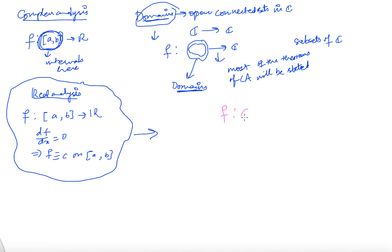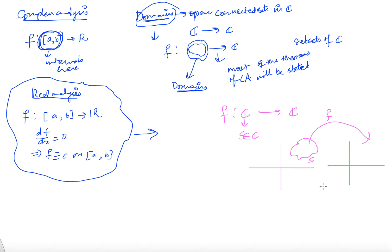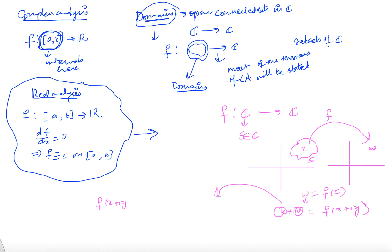Now suppose you have a function from C to C, or from some subset S of C. So how this function looks — you have C here, you have C here, you have some subset S here, and then this function is from this set S to the whole complex plane C. You will take a z from here and get a w here, so basically you have w equal to f of z, and this is a complex number. So it is actually u plus i times v equal to f of x plus i times y, where u and v are real.